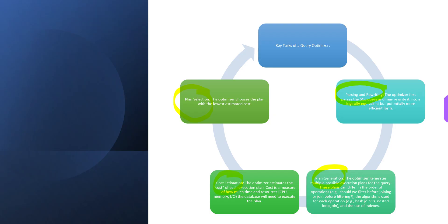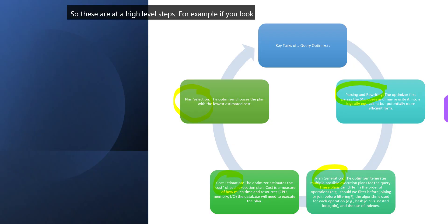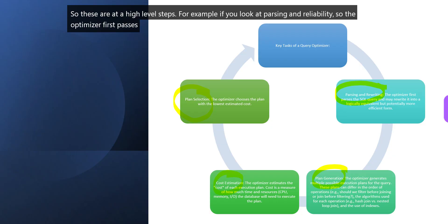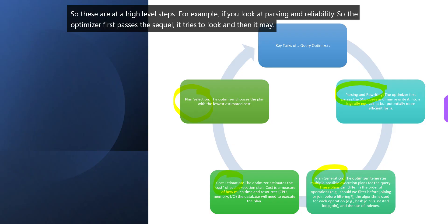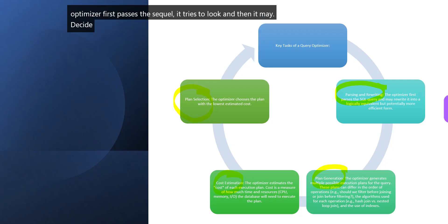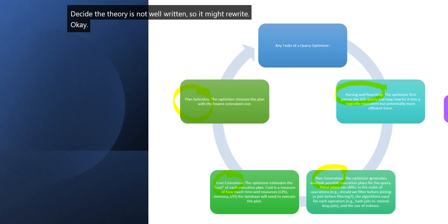If I break that into different tasks, there would be different tasks like parsing and rewriting, plan generation, cost estimation, and then plan selection. These are the high level steps. For example, parsing and rewriting — the optimizer first parses the SQL, it tries to look, and then it may decide the query is not well written, so it might rewrite it to make it more efficient.